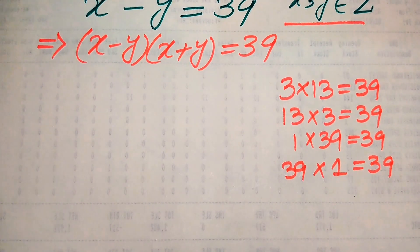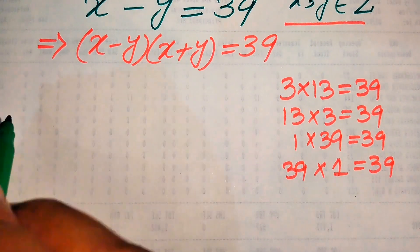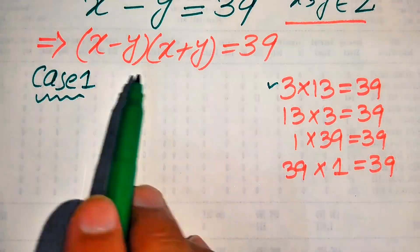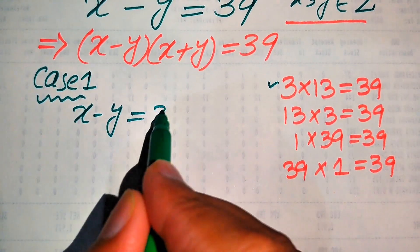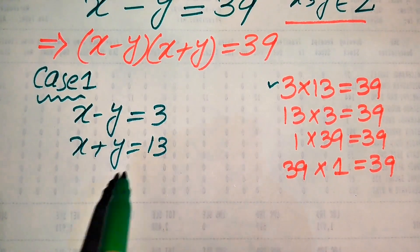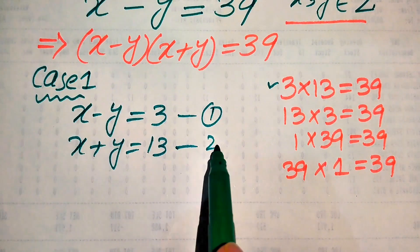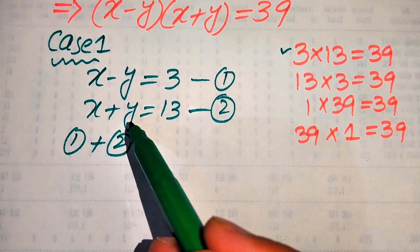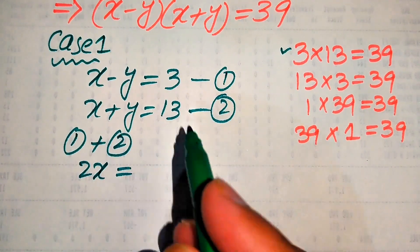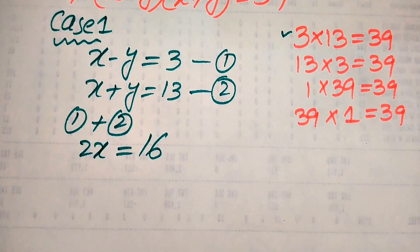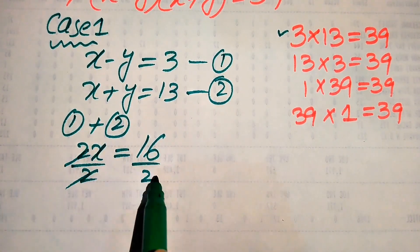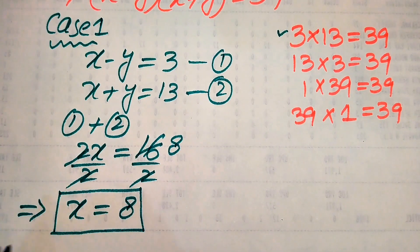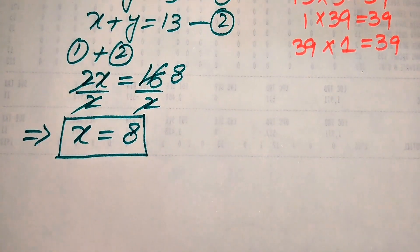We solve these four possibilities one by one. In the first case, we compare the two factors with these two numbers: x minus y equals 3 (equation 1) and x plus y equals 13 (equation 2). Adding equations 1 and 2, the y terms cancel and we get 2x equals 3 plus 13 equals 16. Dividing both sides by 2, we get x equals 8, which is a positive integer.